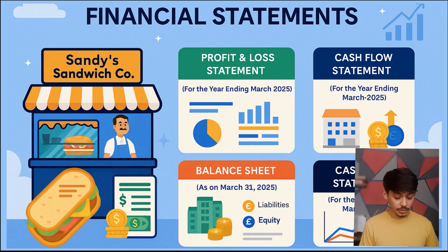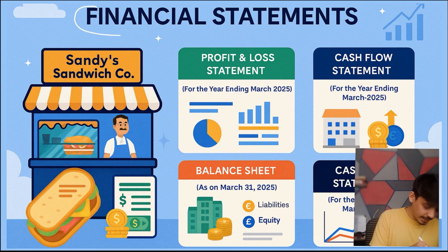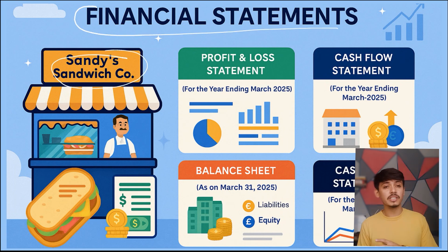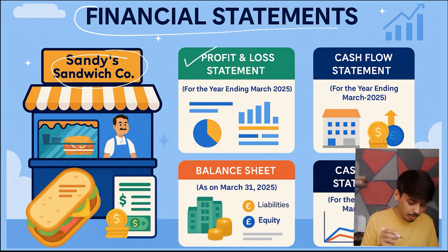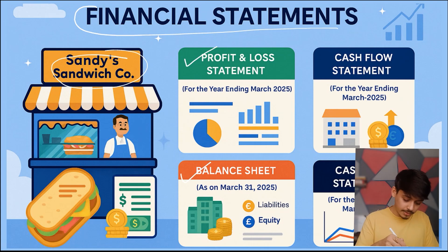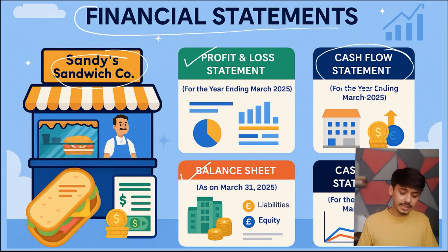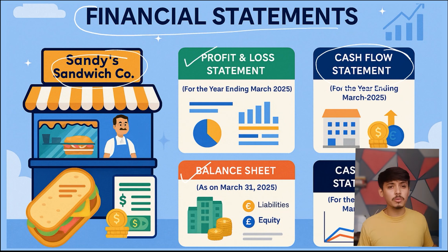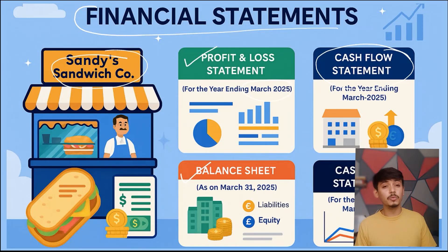We are going to understand the entire financial statements using a case study of Sandy Sandwich Company, which is a private limited company. We will understand how their profit and loss statement is created, how their balance sheet is created, and through that we will understand how the entire cash flow statement is built — a three-statement financial model for the year ended March 2025.